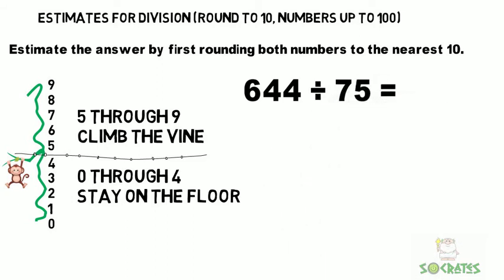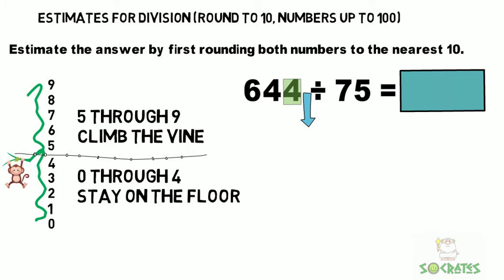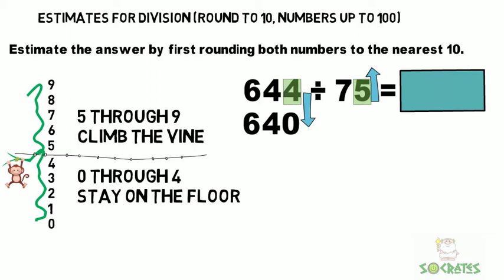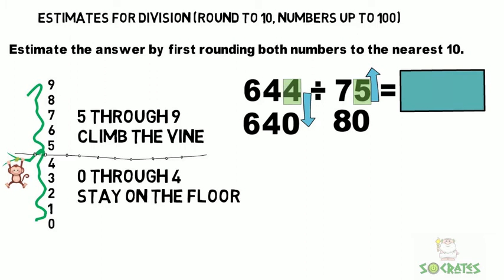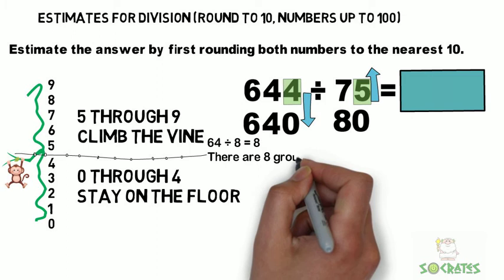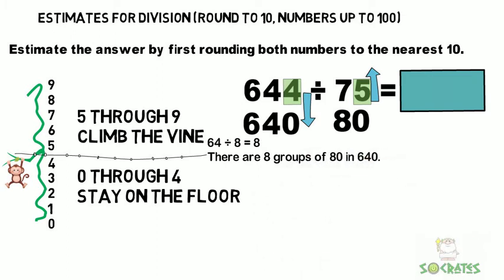We have 644 divided by 75. The 4 tells us we're going to go down to the next 10, so it's 640. The number 75, we're going to round up to 80. Now you divide: 64 divided by 8 equals 8. There are 8 groups of 80 in 640, so our answer is 8.